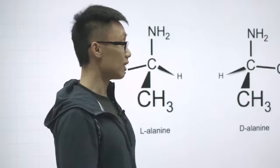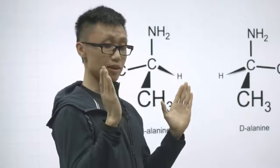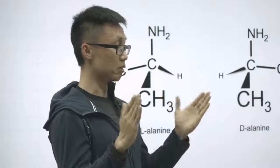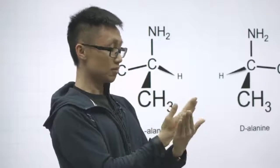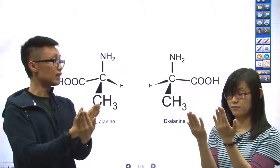Well, to understand that, let's do a simple test. Take out your hands. So our left hands and our right hands look similar. But when we try to overlap them, they can never overlap with each other. This is what we say as enantiomers.